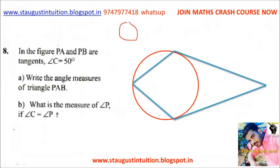First, let's consider the tangent. So that's the tangent. If we join the center, we have the angle of y. This is 50. Now, the radius makes an angle of 90 degrees. The radius is 90 degrees.